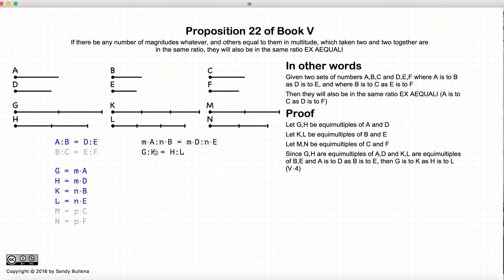But M A is equal to G, N B is equal to K, M D is H, and N E is L. So in other words, G to K is equal to the ratio of H to L. So if A to B is equal to D to E, G to K is equal to H to L.